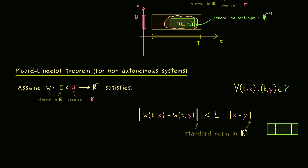We say this has to hold for all points chosen in the rectangle K. The constant L can only depend on the chosen rectangle K — it does not depend on the chosen t, x, or y. Therefore the whole claim is that for every possible rectangle we find such a constant L_K. We can make it more general by saying that for every compact set in our domain we find such a constant. This is just easier to write down, and our local Lipschitz condition is now complete.